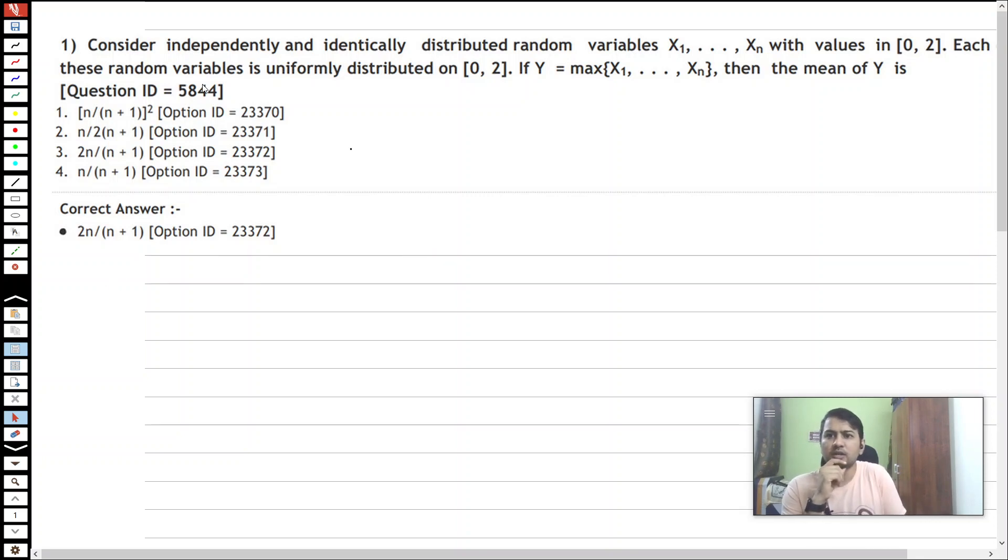In question number one, we have to consider variables X1 to Xn, each uniformly distributed on [0, 2]. We need to find the expected value of Y where Y is the max of all these numbers.